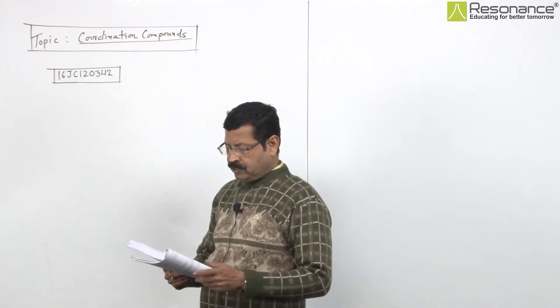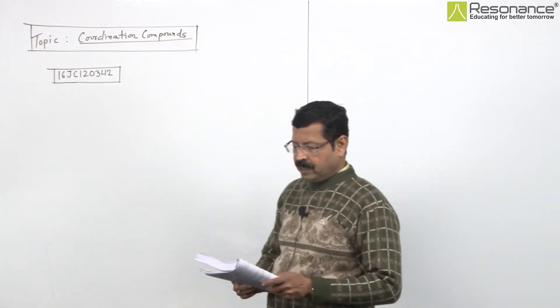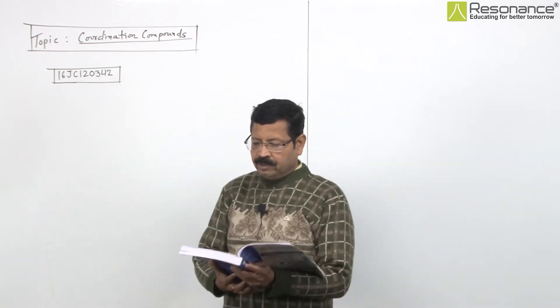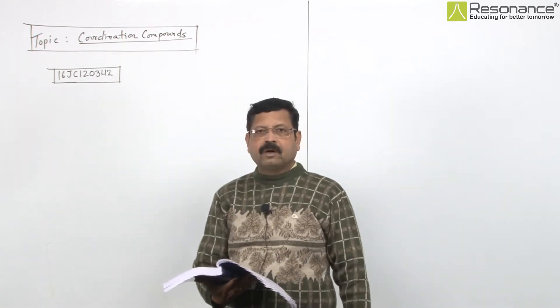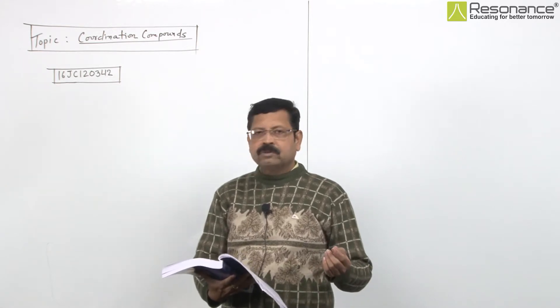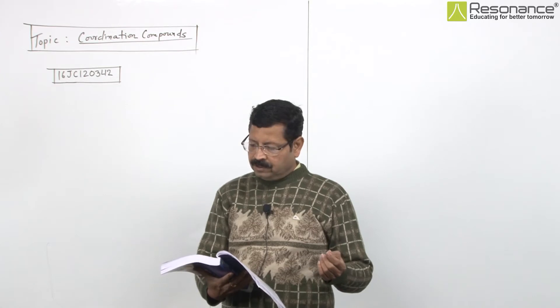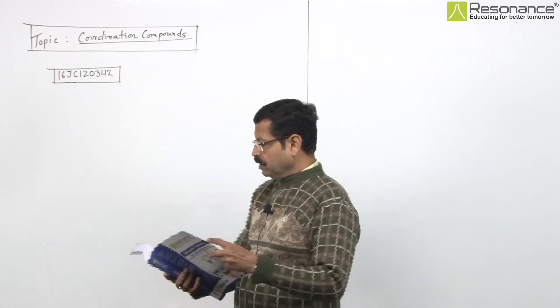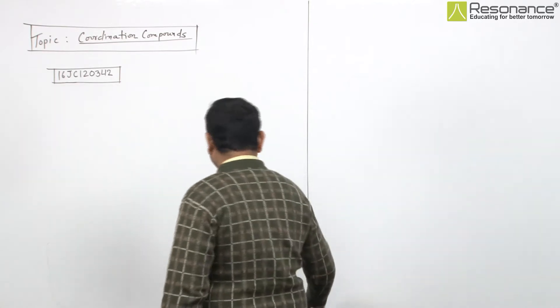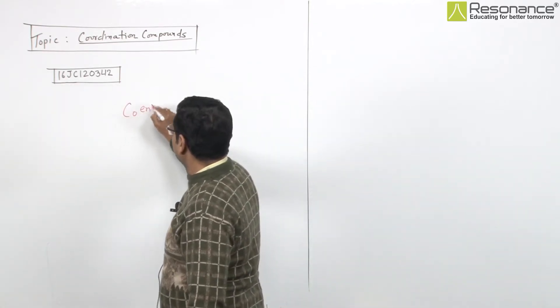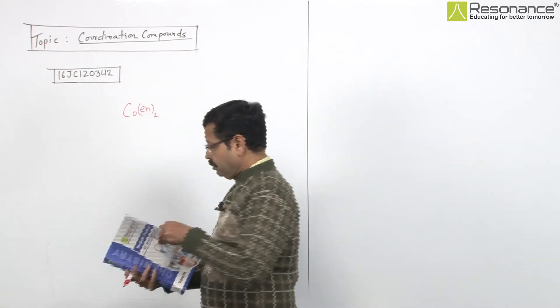This is a comprehension-based question in coordination chemistry. There are a variety of methods applied to find out the structure of complexes. An isomer of the complex is given - we'll write it as Co(en)2(H2O)Cl2.